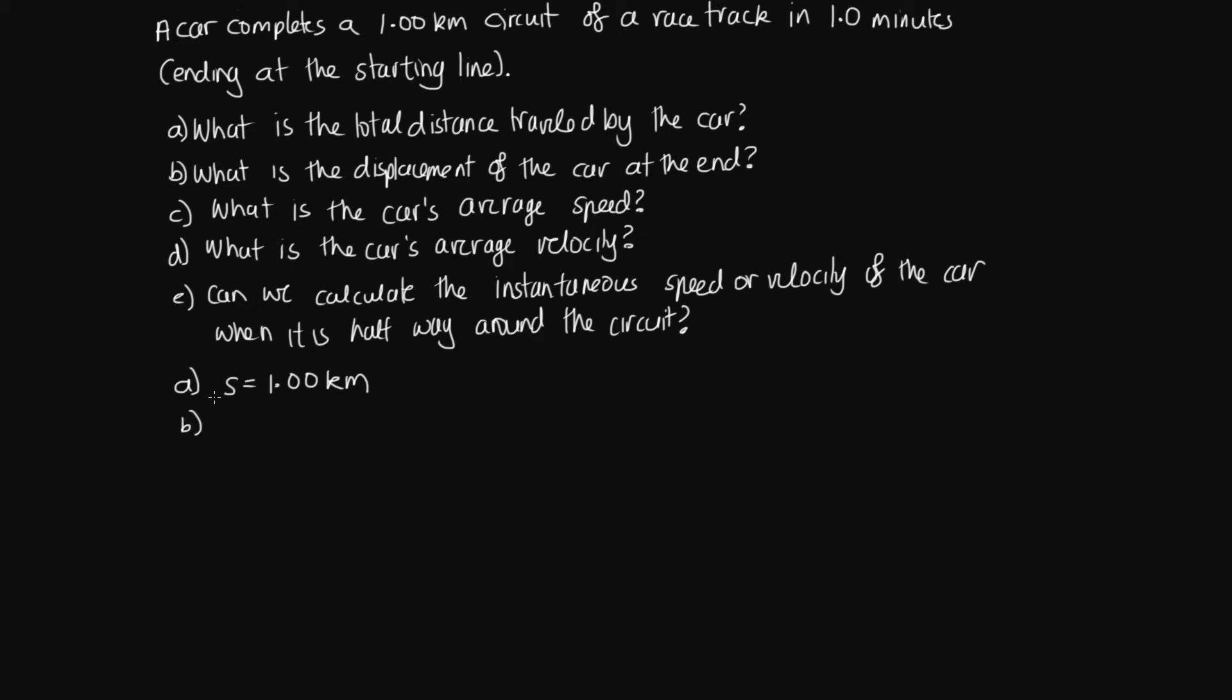Part B says, what is the displacement of the car at the end? Now this car is going around a circuit and so it starts at some point and then it comes back to this same point. So the total displacement is how far it ends up from the origin, the origin being its starting point. And it ends at the same point it starts at and so the total displacement is equal to 0 because it's at the same place. So 0km or metres, it's 0.